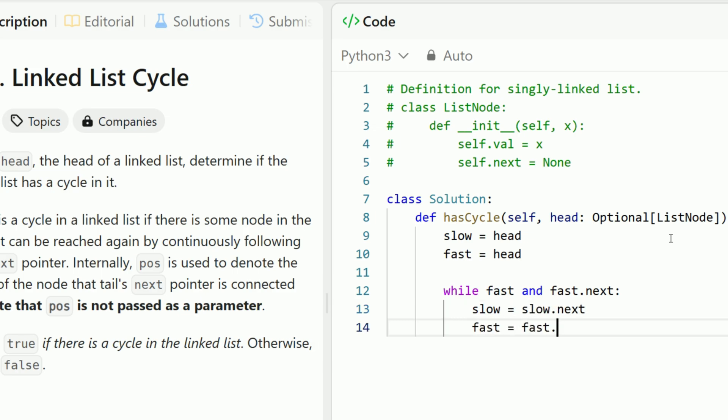Fast is equal to fast dot next dot next because we want to move it twice in a single iteration. And now you see why we need to make sure that fast dot next is not null either, because we're using fast dot next dot next. And if this was null, we would have a null pointer exception over here. Now we're going to check if slow is equal to fast, then we have a cycle. So return true. Else, that means eventually, we're just a normal linked list and we've seen the null pointer. So there is no cycle, return false.